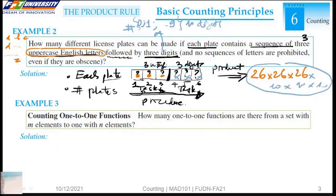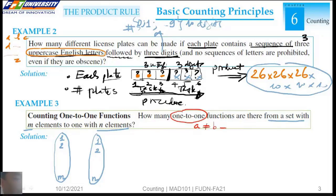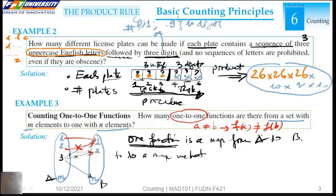For the next example, how many one-to-one functions from a set with m elements to n elements? One-to-one means if a is not b, we have... If we map to here, we cannot map to here. In the third, we cannot map to 1, and we cannot map to 2.